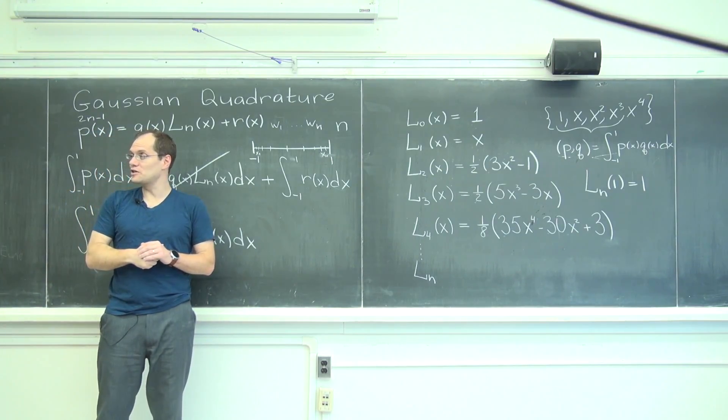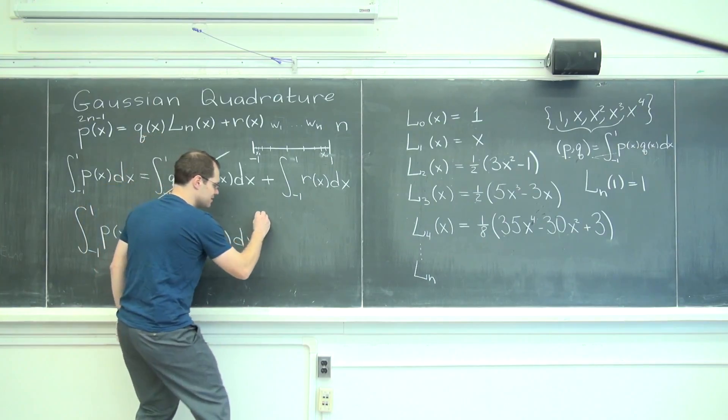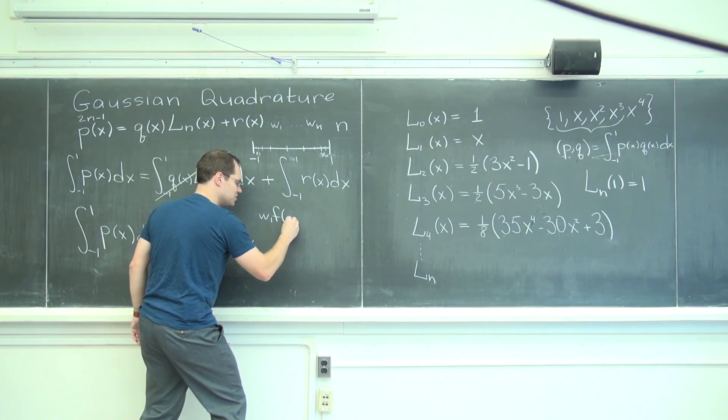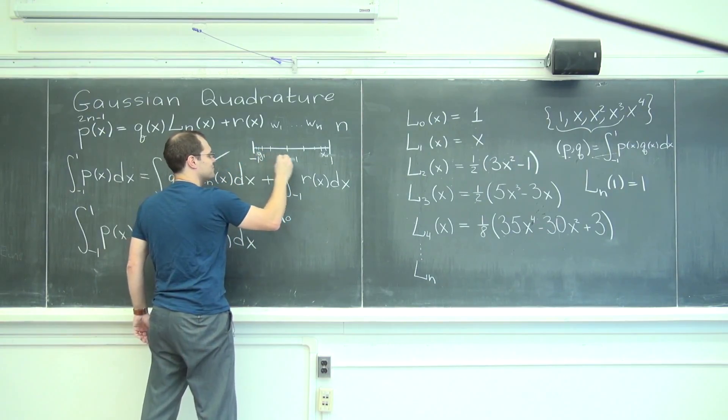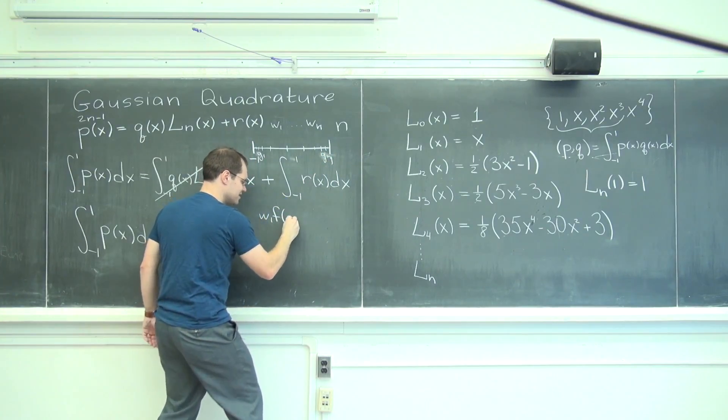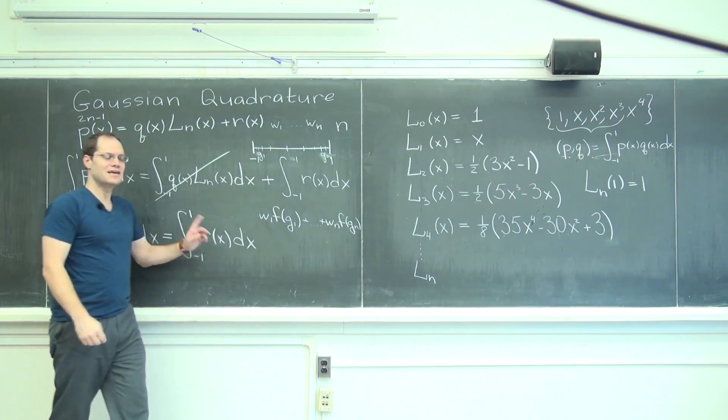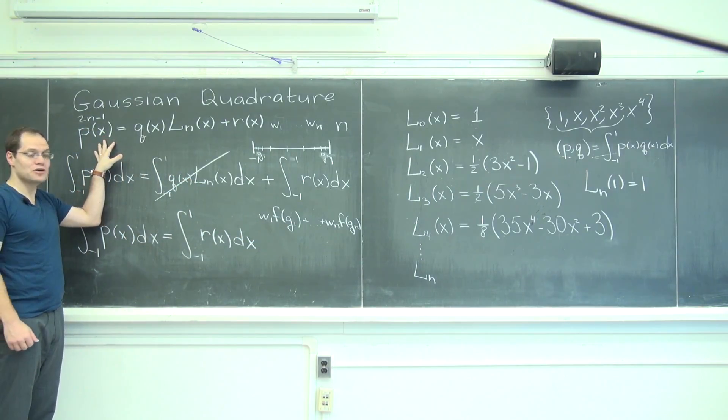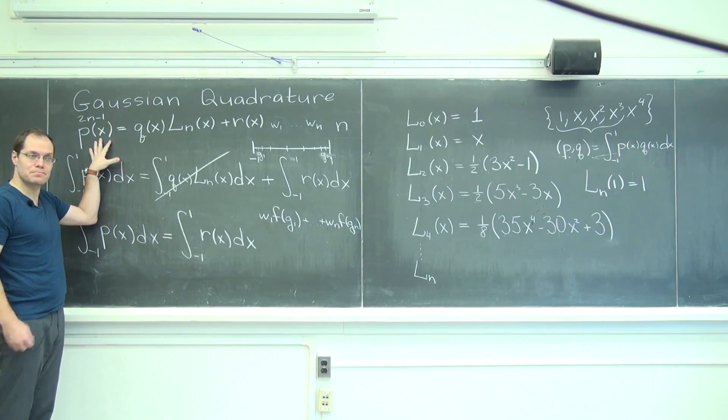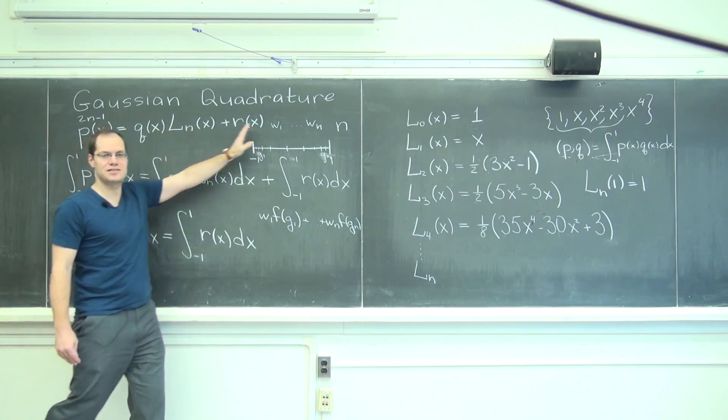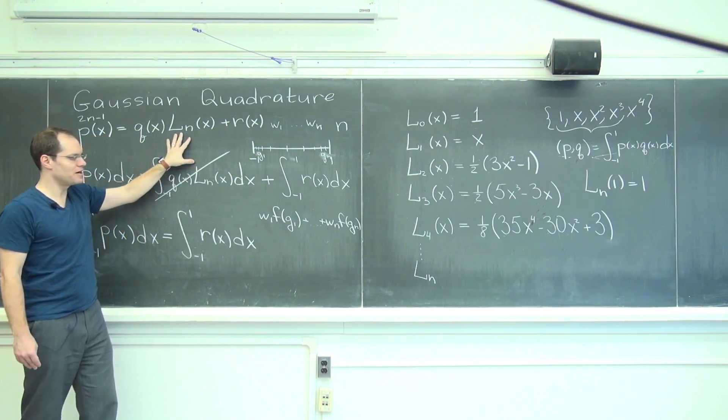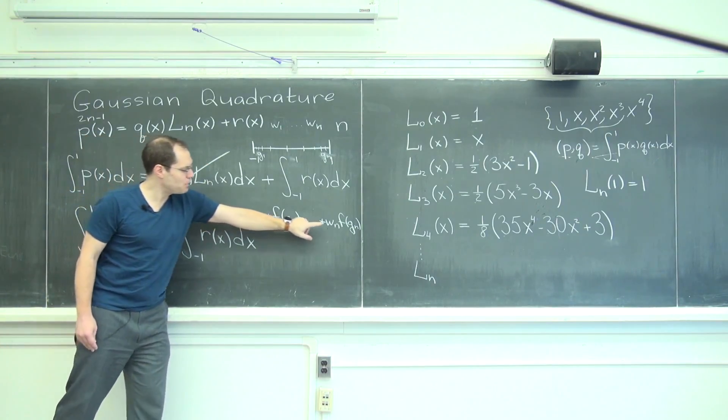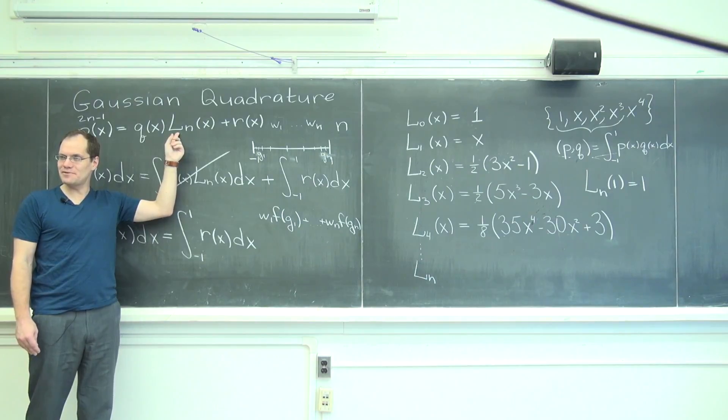And now look what happens. If that is now my scheme, W1F of this very special, should we call them G1s maybe for Gaussian, right? From G1 to Gn, Gaussian points. If this is my scheme, and I apply it to this function, and of course, I'm applying it to this function, but I know the analysis. I know that this function equals this product. This part will drop out because I'm evaluating it at those points where this function vanishes. I'm evaluating it at the Legendre zeros.